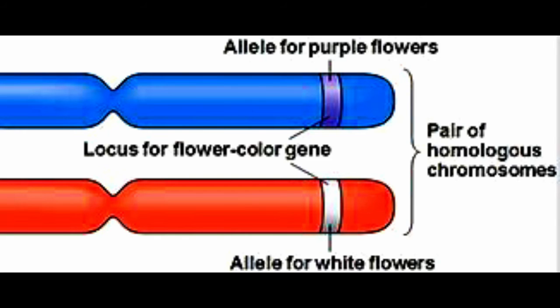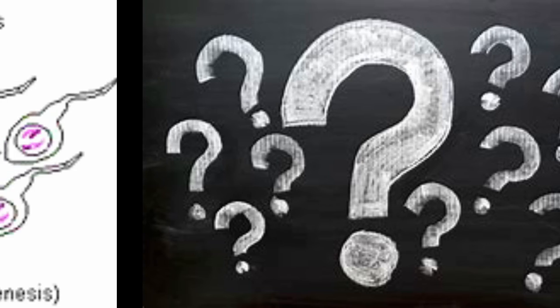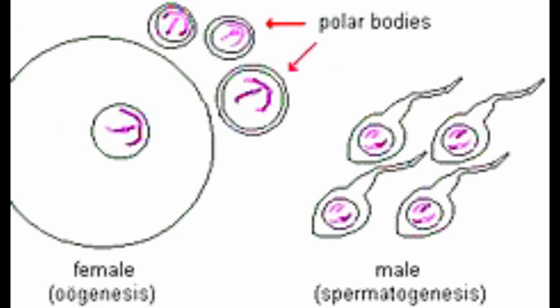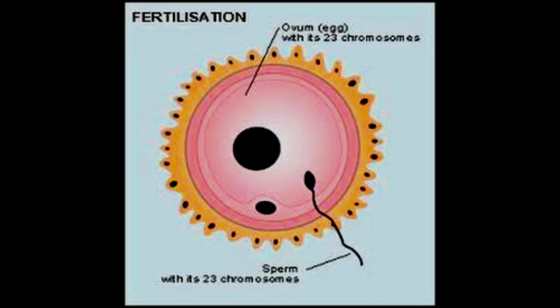As we've seen, meiosis halves the number of chromosomes and produces gametes. This shows a gamete from a female and a gamete from a male. You can see that the chromosomes are single, not paired. In sexual reproduction, these gametes join together — this is called fertilisation.